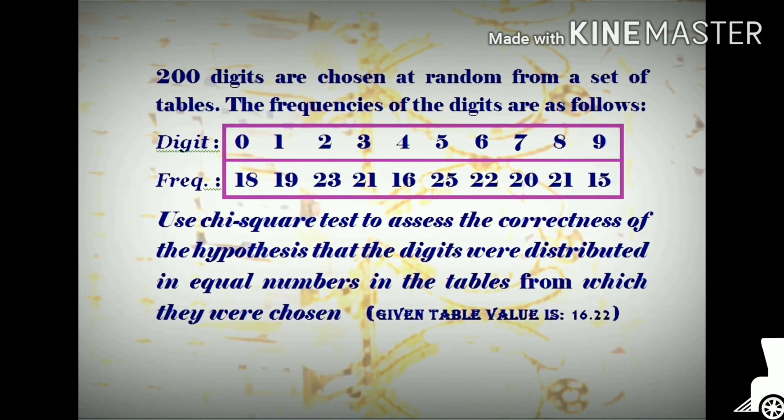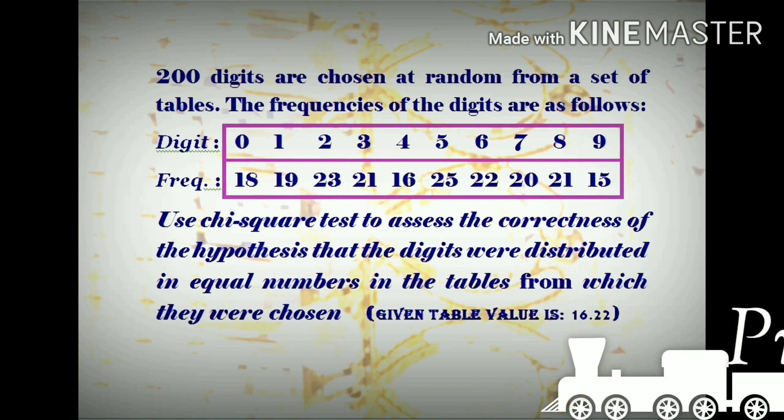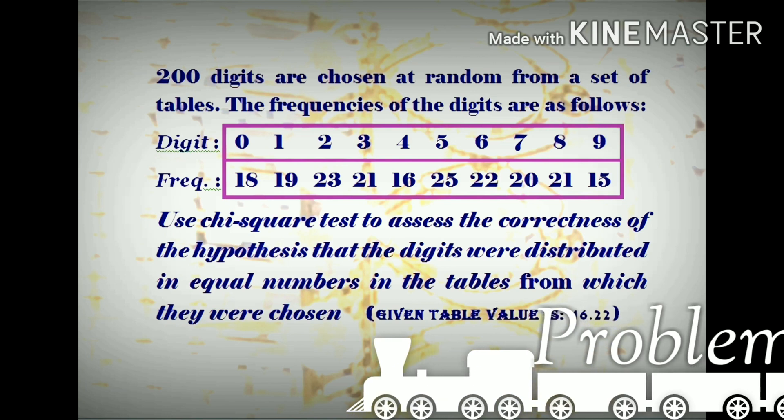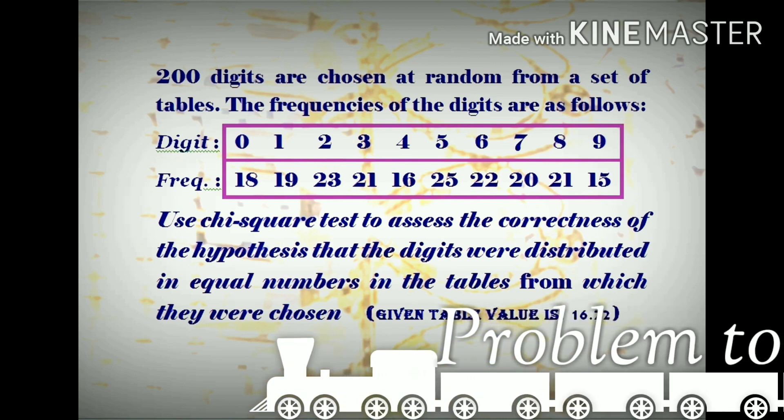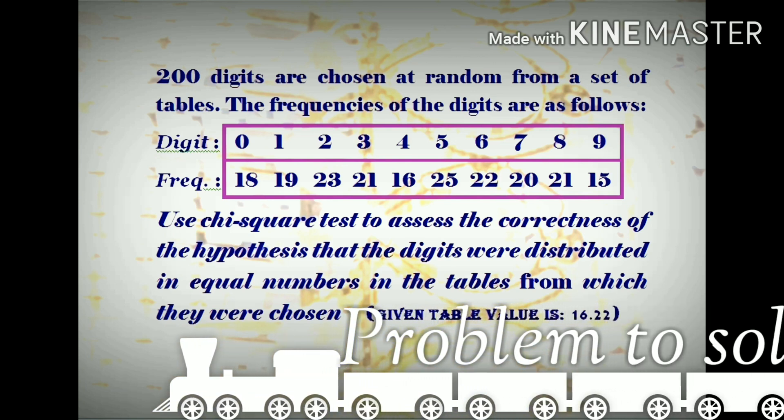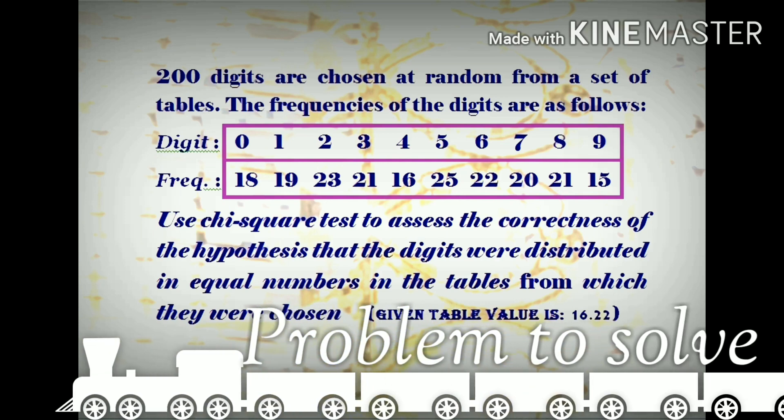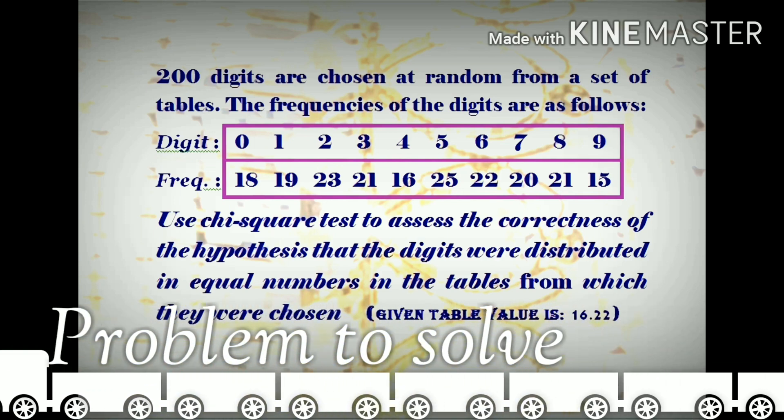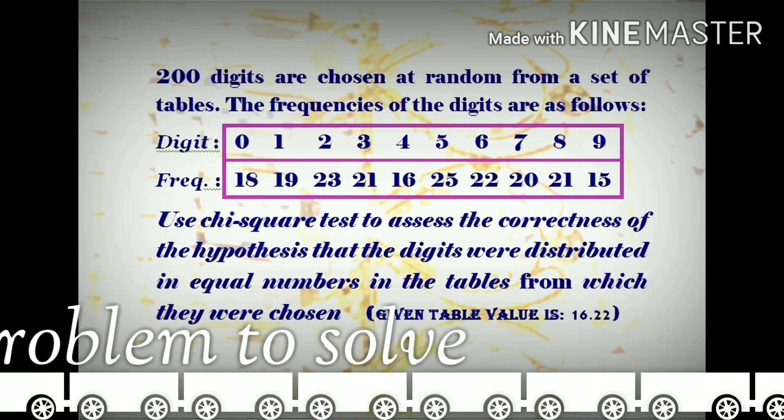200 digits are chosen at random from a set of tables. The frequencies of the digits are as follows: Digit 0 to 9, Frequencies 18, 19, 23, 21, 16, 25, 22, 20, 21, and 15.